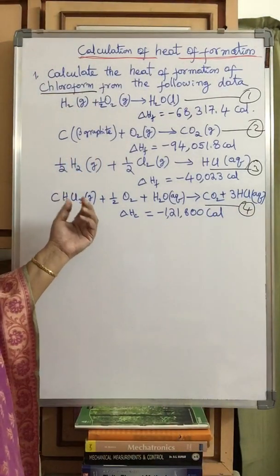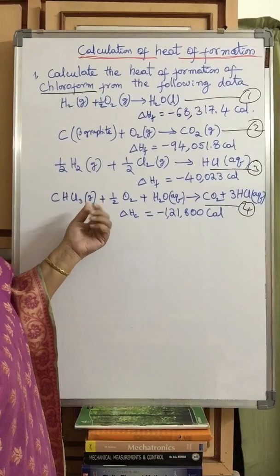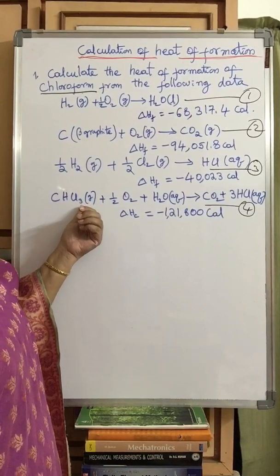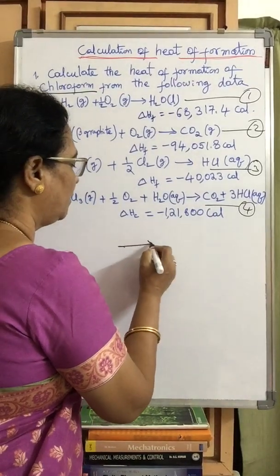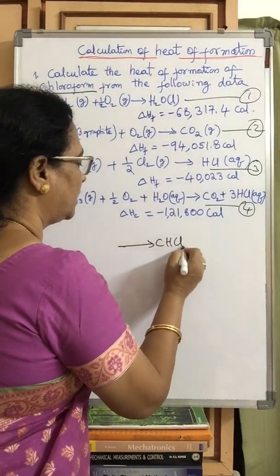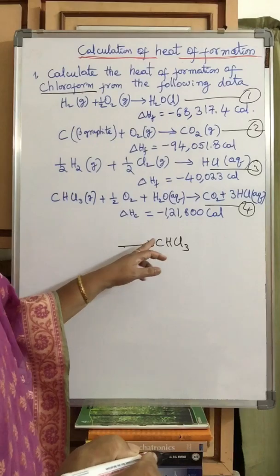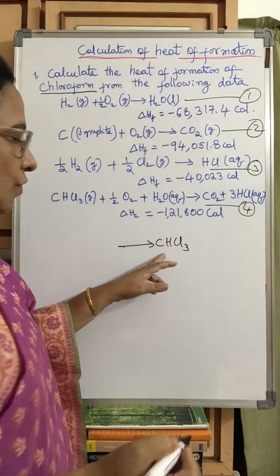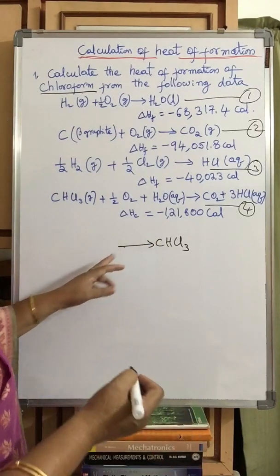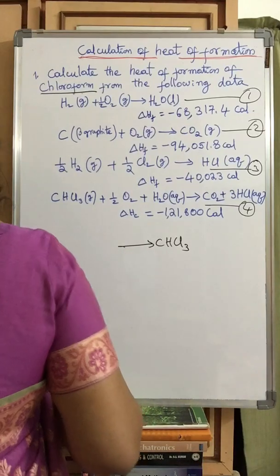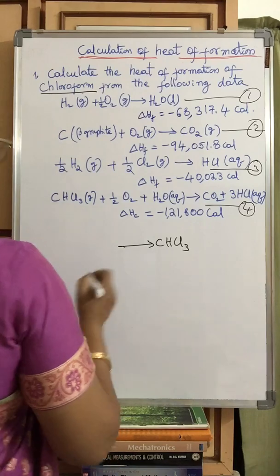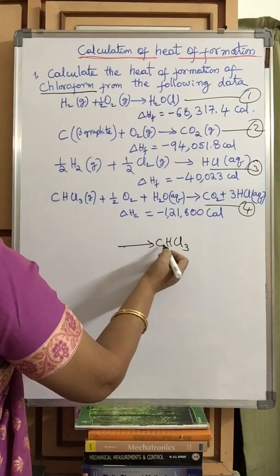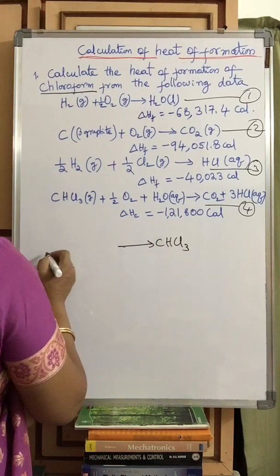Heat of formation of chloroform, that means CHCl3. You should have an equation here. What is heat of formation? To form one mole of CHCl3 from its constituent elements. So what are the constituent elements here? C, H2 and Cl2.